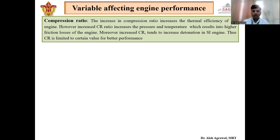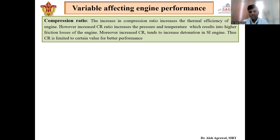The first one is compression ratio. From the Otto cycle efficiency or from diesel cycle efficiency, we have seen that increasing the compression ratio increases the thermal efficiency of the engine. But it comes with a certain cost — with increasing compression ratio, the temperature and pressure inside the engine also increase, which results in different types of losses or increased friction loss.